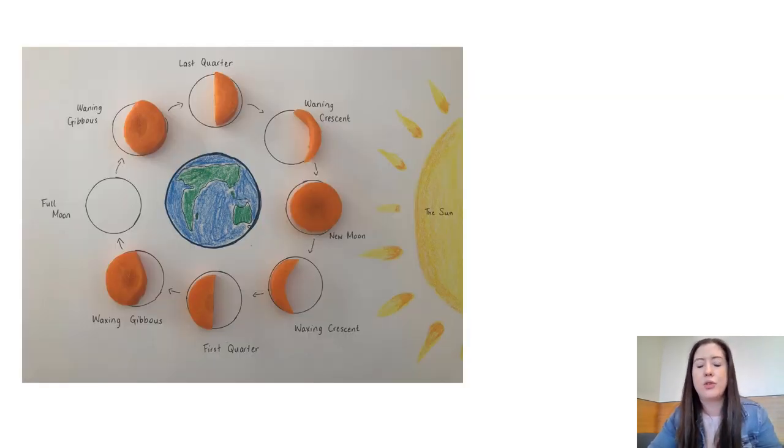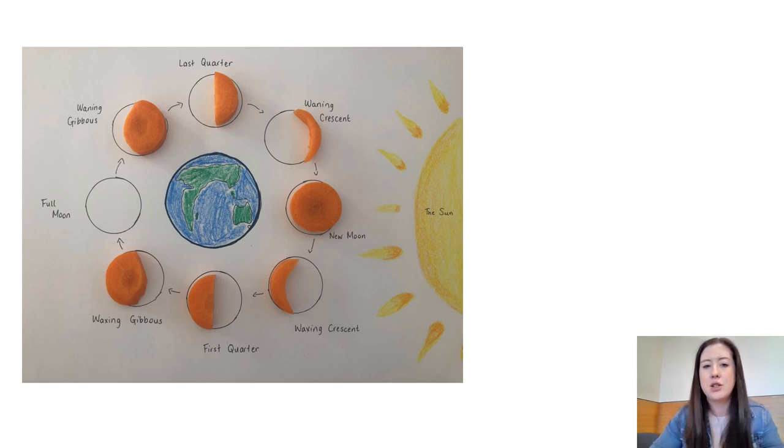Another way that you can be creative with your phases of the moon model is to use carrots. It's not as delicious as Oreos but it's definitely healthier. This is one that I created on the weekend, just slicing up the carrots and then eating part of it to represent the different phases of the moon.